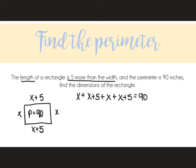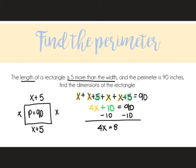The perimeter equals 90. I combine my like terms — x, x, x, x — that's 4x total. I have 5 plus 5, so that's plus 10, equals 90. I would subtract 10 from both sides. 4x equals 80. I divide by 4. x equals 20.